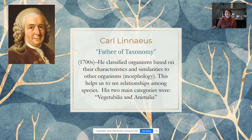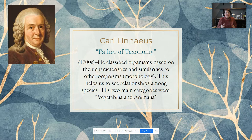The first man who is known as the father of taxonomy is Carl Linnaeus. He classified organisms based on their similar characteristics, using what we call morphology, or physical traits, to help group them together. His main categories were Vegetabilia and Animalia. Carl Linnaeus didn't have DNA or evolution to help bolster his taxonomy or his classification.